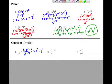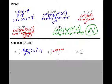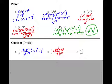Does it work with variables? We've got x, x, x, x, x — five of them — over x cubed, so three of them. What's going to happen? He cancels him, he cancels him, he cancels him. What's left? X squared.